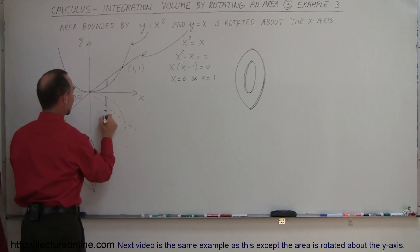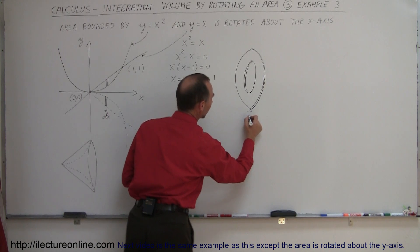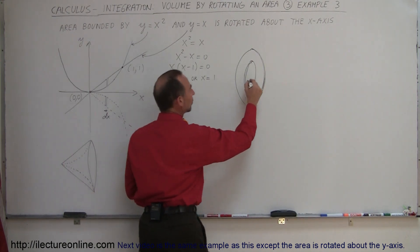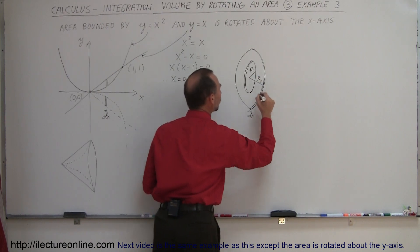So there's a little washer that we get by slicing this volume. The thickness would be dx, and then we have an inner radius, let's call that r1, and an outer radius, let's call that r2.